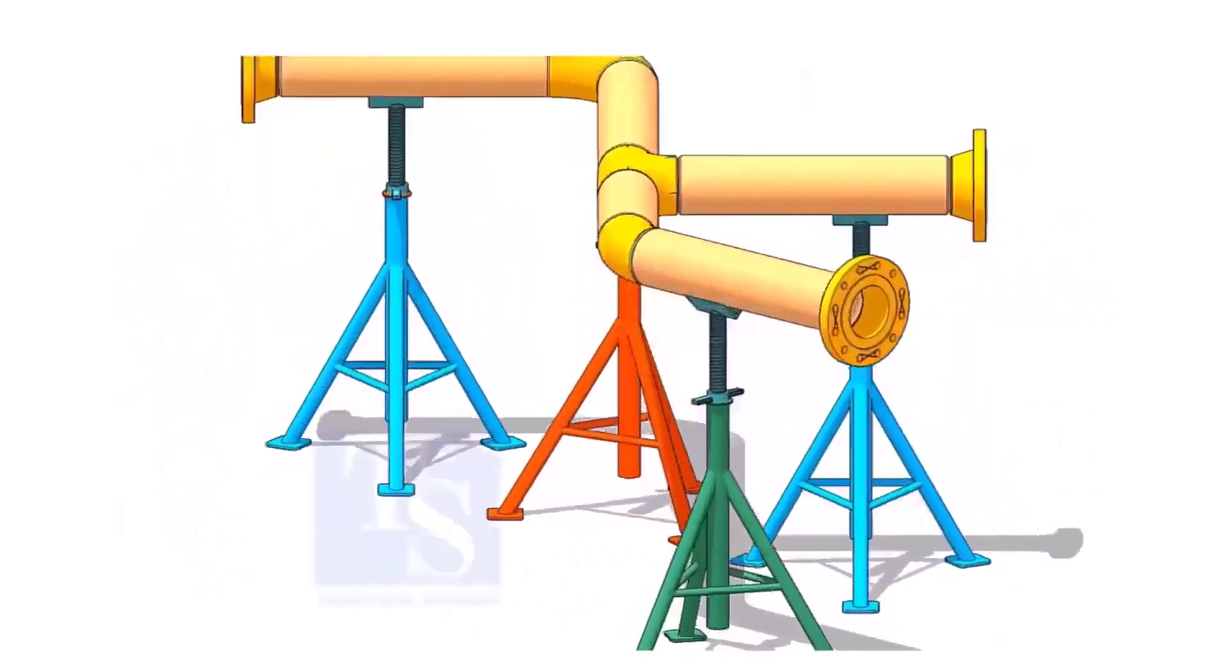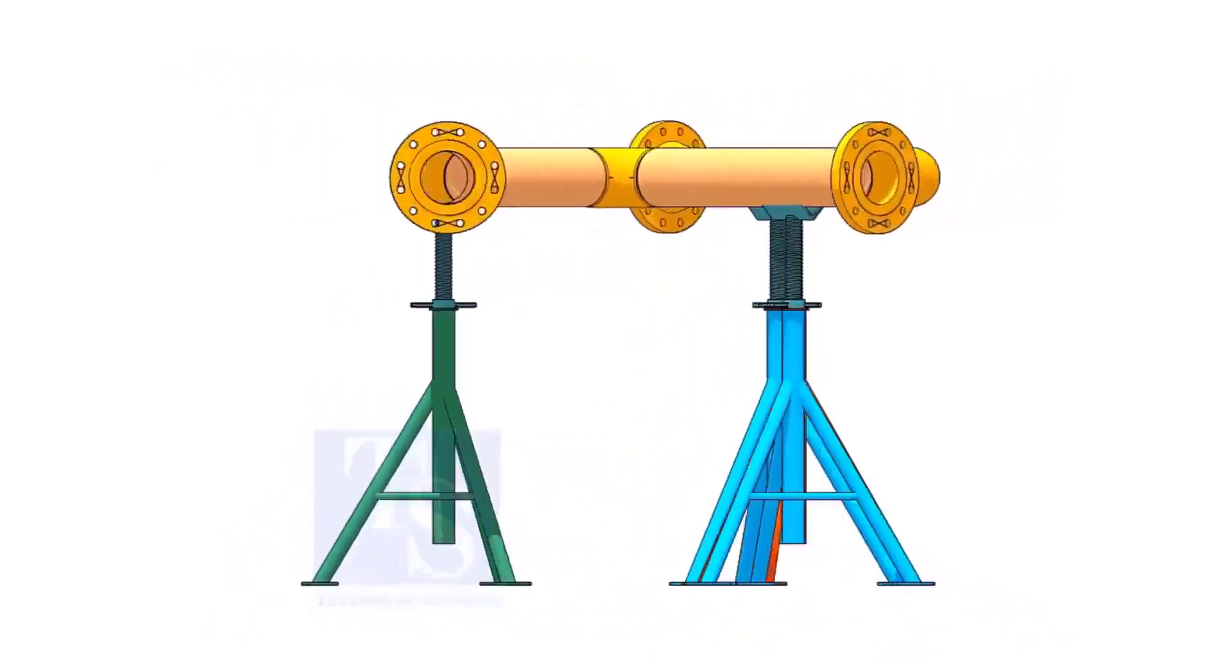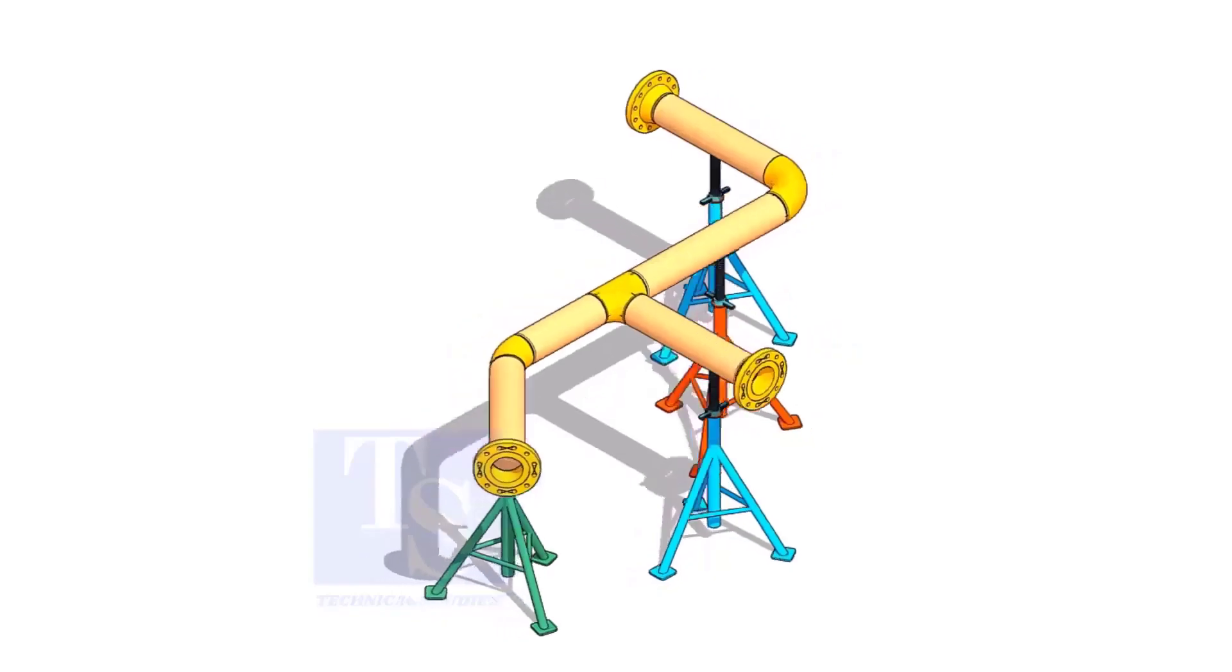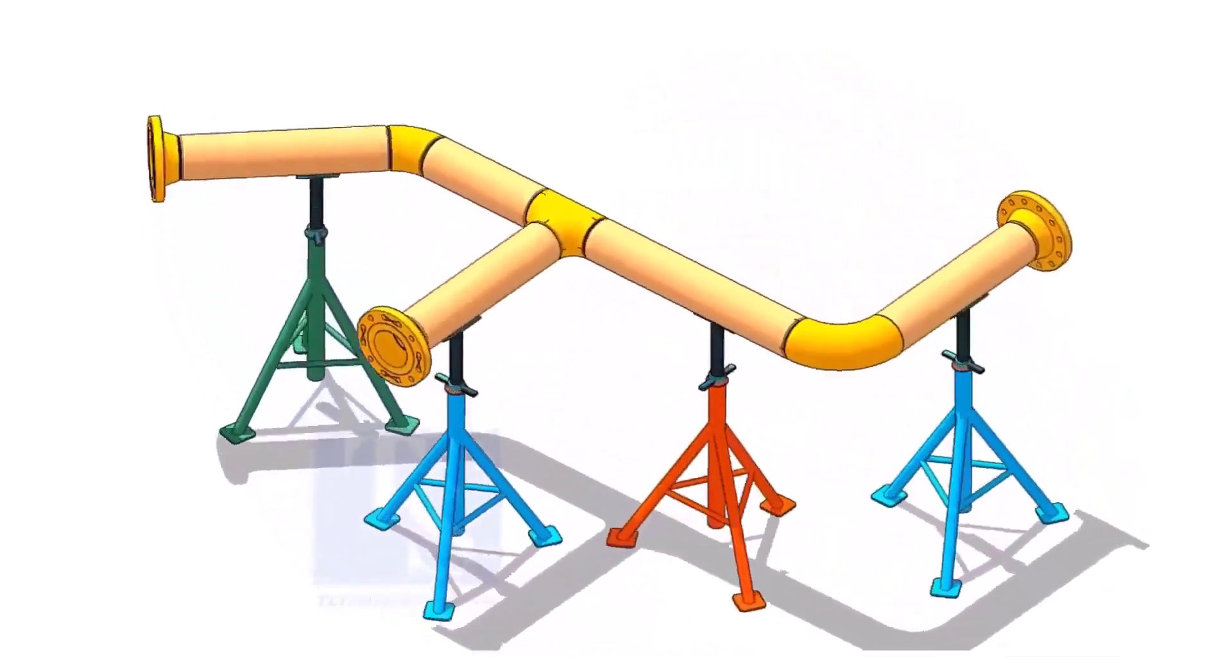If you get an isometric drawing for fabrication, what you will do first? I am sure you will check what is the size of the pipe, then the pipe schedule, flange class, etc.